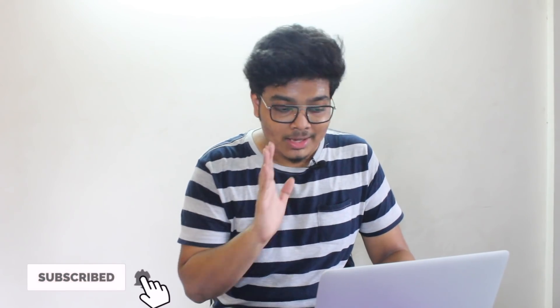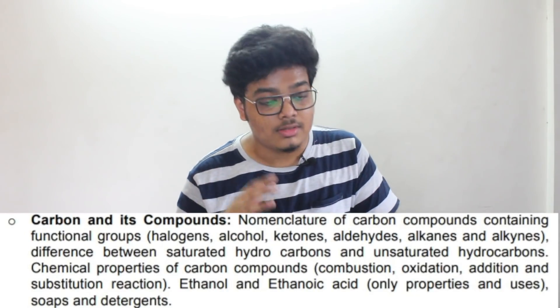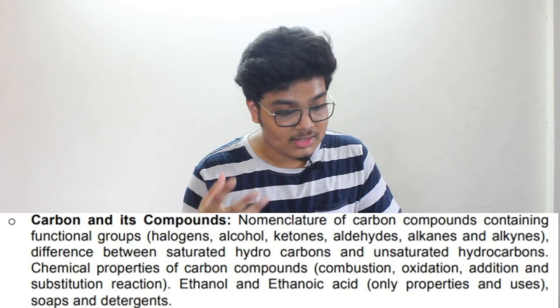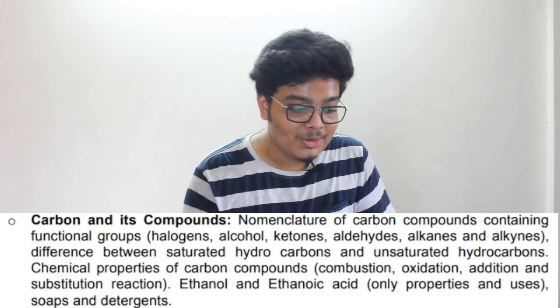Carbon and its Compounds is the most shocking thing. The portions removed are: covalent bonding in carbon compounds, versatile nature of carbon, and homologous series. Also removed are nomenclature of carbon compounds containing functional groups such as halogens, alcohols, ketones, and aldehydes, along with chemical properties of carbon compounds including ethanol and ethanoic acid properties — everything in those sections has been removed.